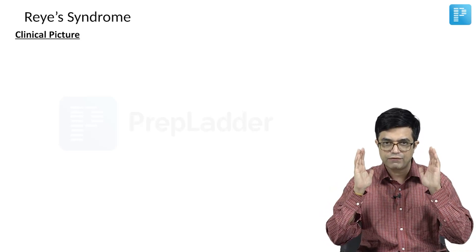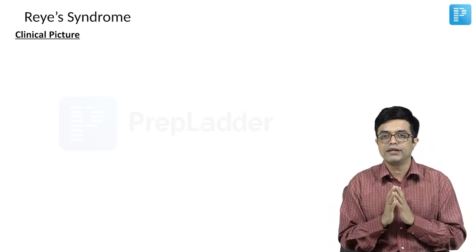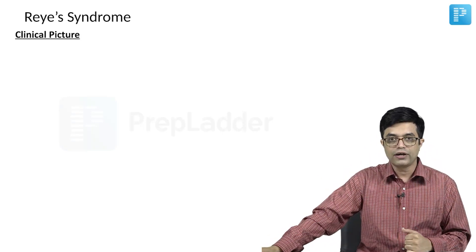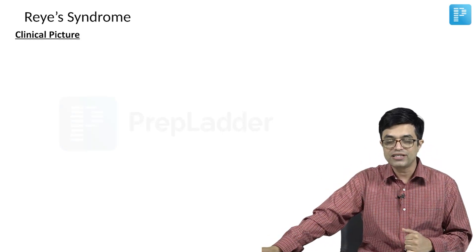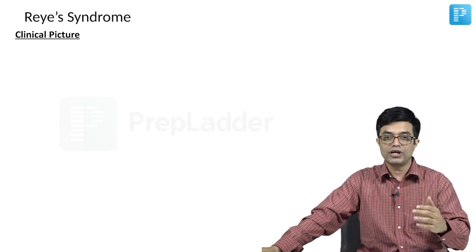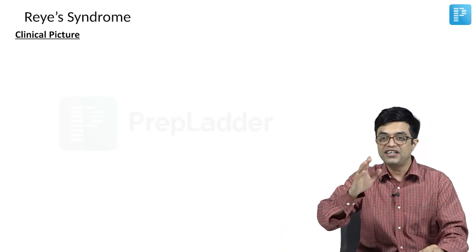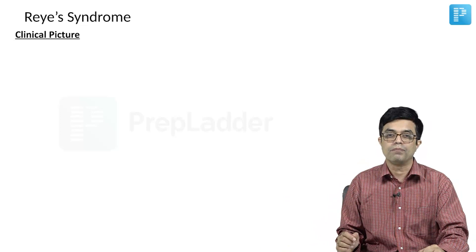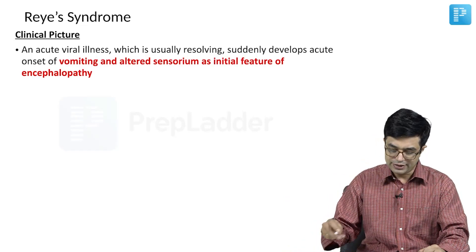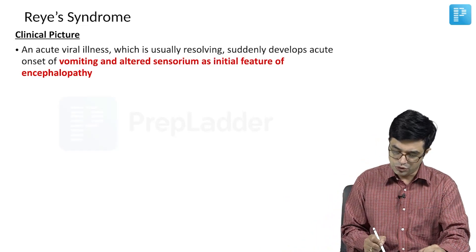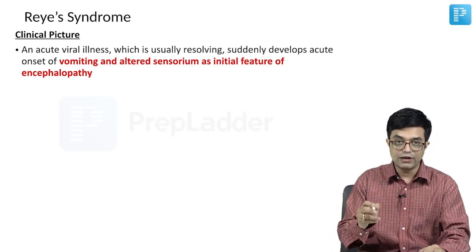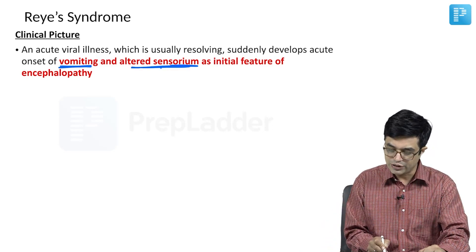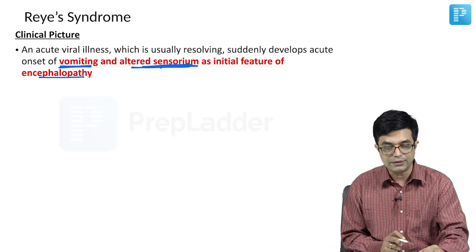This picture is what should make you think that this is Reye's syndrome. In fact, one of the older review articles says presence of severe jaundice at the onset should take the diagnosis away from Reye's syndrome. So, the clinical picture is: there is an acute viral illness which is usually resolving, and the patient suddenly develops acute onset of vomiting and altered sensorium as initial features of encephalopathy.